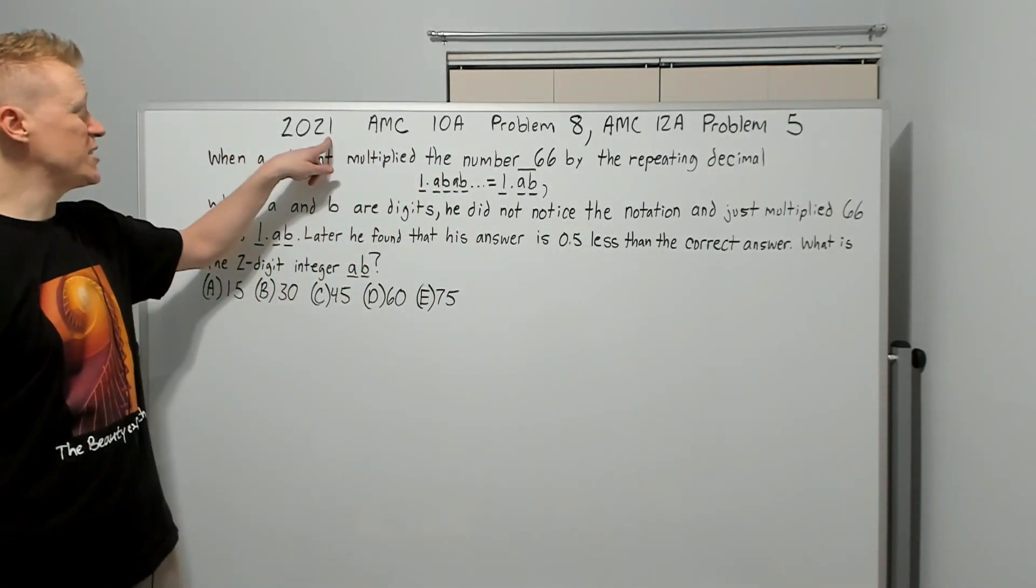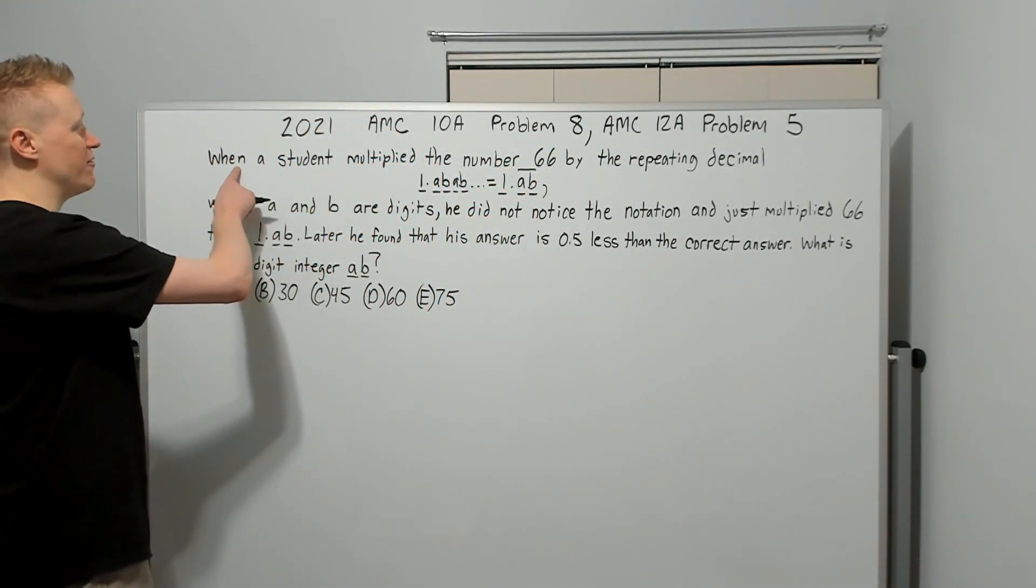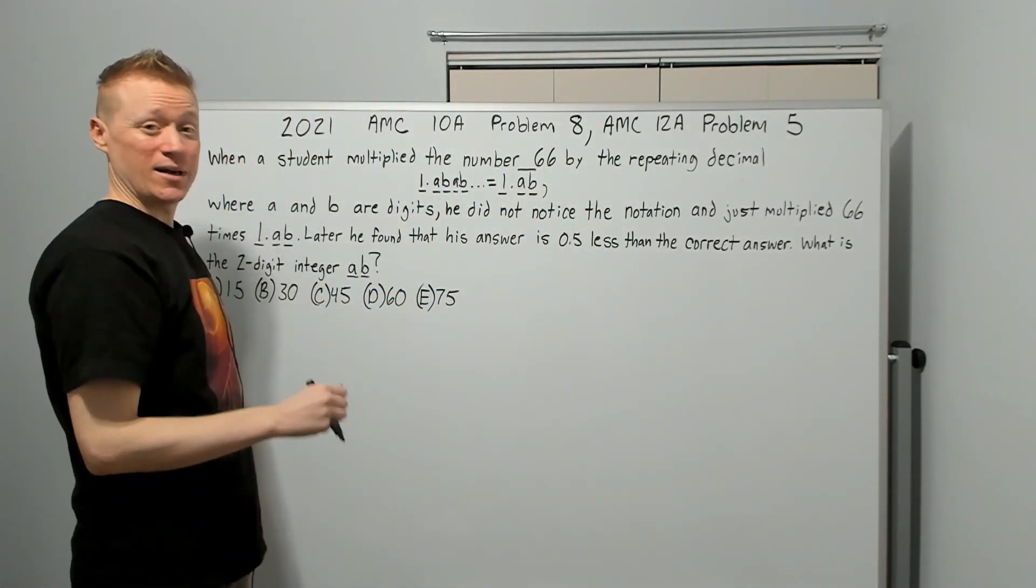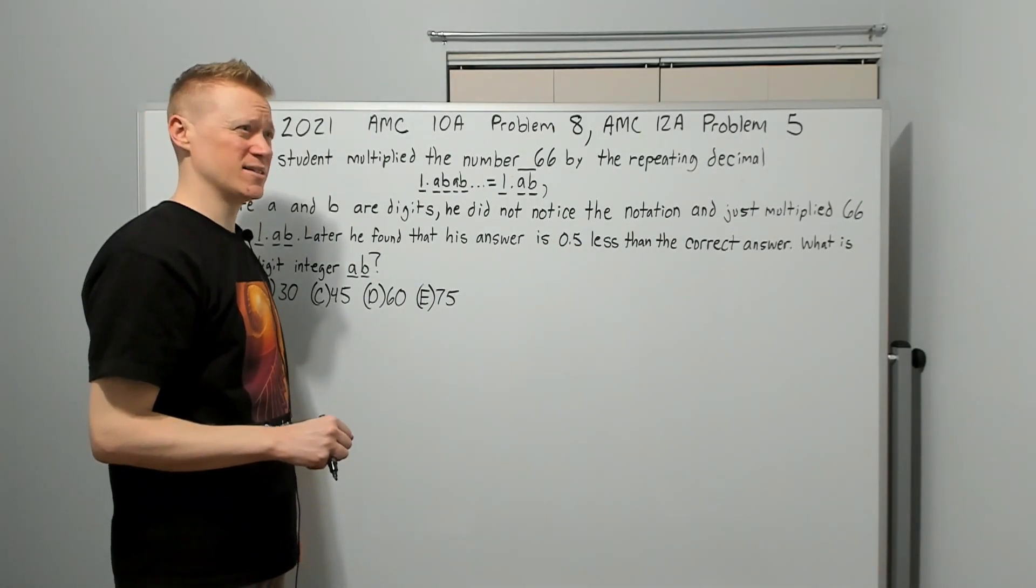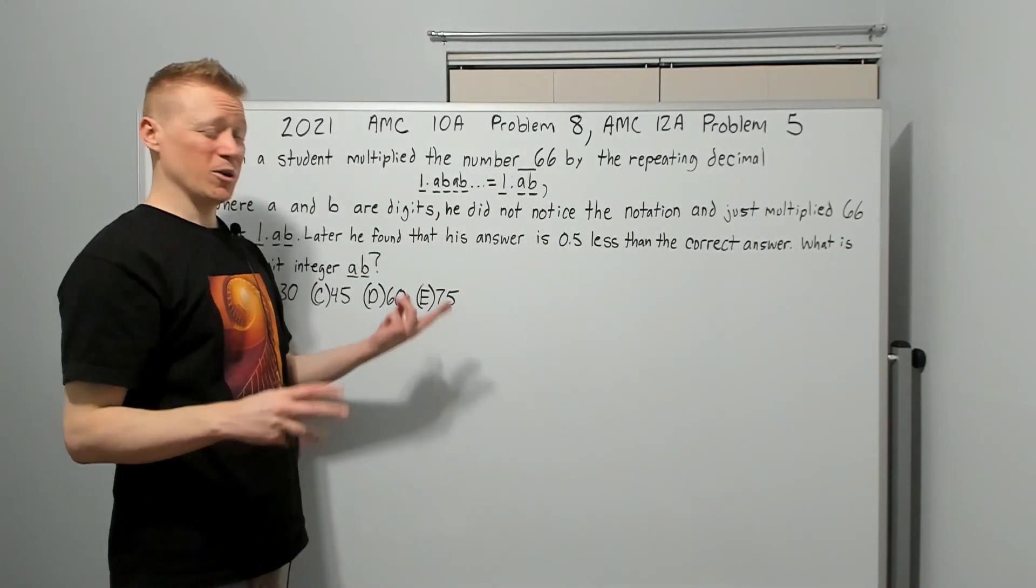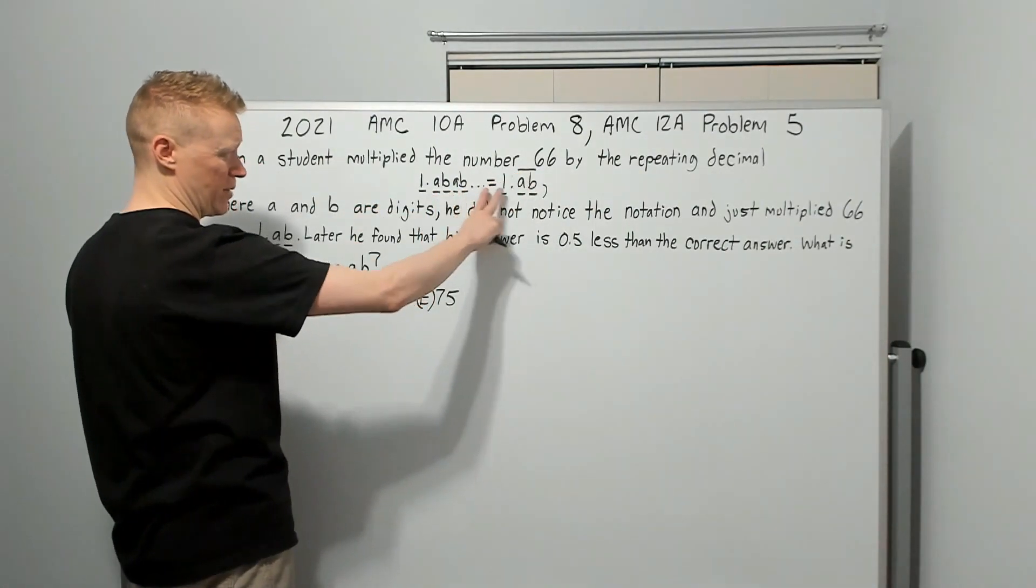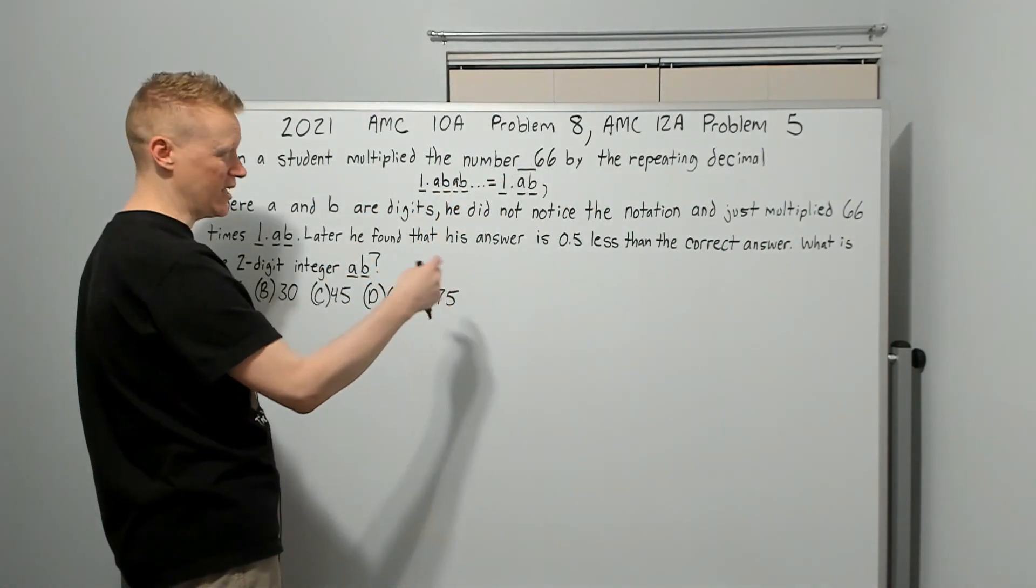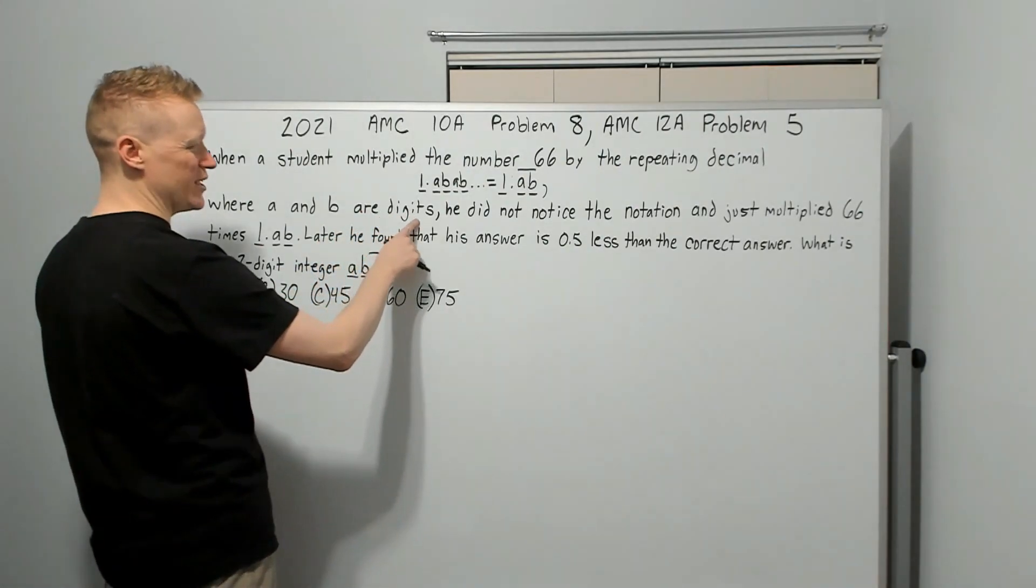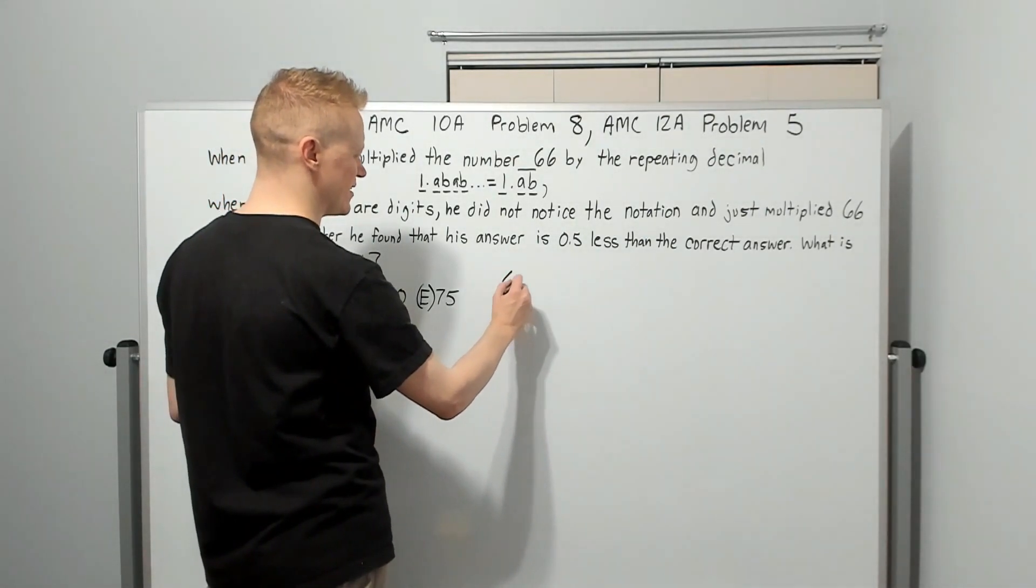Continuing on with the 2021 AMC 10A Problem 8, also the AMC 12A Problem 5. When a student multiplied the number 66 by the repeating decimal, it's ABAB dot dot dot, meaning it keeps going forever. This is the repeated symbol. Where A and B are digits, he did not notice the notation.